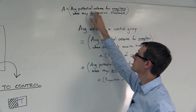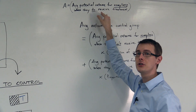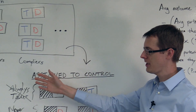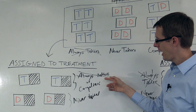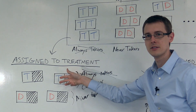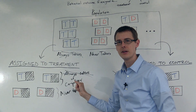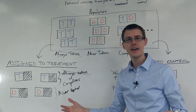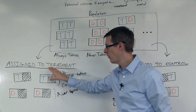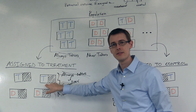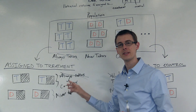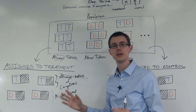This first number — the average potential outcome for compliers when they do receive treatment — we learn directly from the data. We just go over here to our treatment group, and because there are no always-takers, we know that these people are compliers and they receive treatment. So we look at the average outcome — say in the Oregon Healthcare experiment, the average cholesterol for the people in the treatment group who got treated. That tells us the average potential outcome for compliers when they get treated.